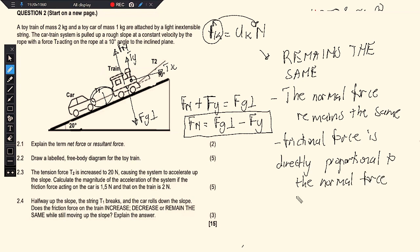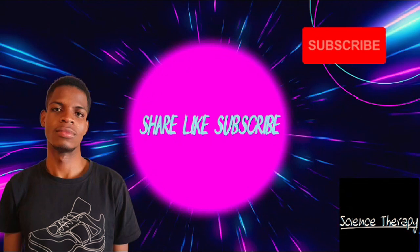The friction force remains the same. The normal force remains unchanged, and since Fk = μk × N, and μk is constant (changing it would require changing the surface material), with the normal force also constant, the kinetic friction must remain constant. That is how you tackle this question for its marks.